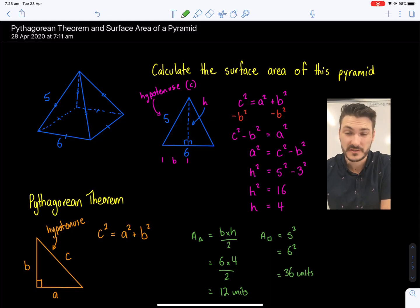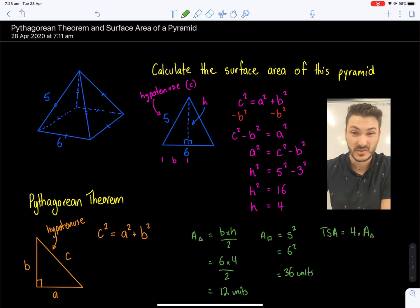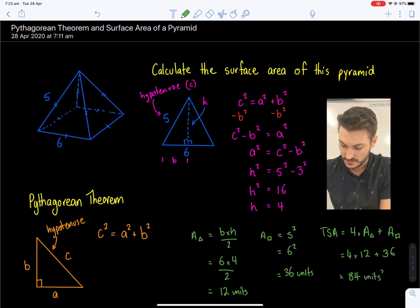And the last thing we need for total surface area is going to be, total surface area is going to be equal to four times the area of the triangle, because there's four of them, plus the area of the square, which is going to be four times 12 plus 36. Four 12s are 48, 48 plus 36 is going to be 84. 84 units squared, and I need to square these other units as well, because they're also areas. So the total surface area therefore is 84 units squared.